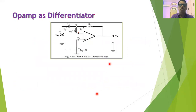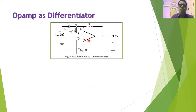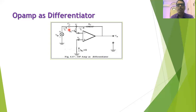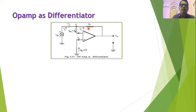Now let us go to the circuit diagram of the differentiator using an operational amplifier. Observe that the non-inverting terminal of the operational amplifier is grounded and the input voltage is applied to the inverting input through the input capacitor. Instead of using an input resistance, we have used a capacitor at the input. A feedback resistance RF is connected between the output and the inverting input.